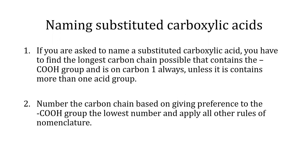Naming substituted carboxylic acids can be done following these rules. Rule one: find the longest carbon chain possible that contains the COOH group, which is always on carbon one, unless it contains more than one acid group. Rule two: number the carbon chain giving preference to the COOH group with the lowest number, and apply all other rules of nomenclature.